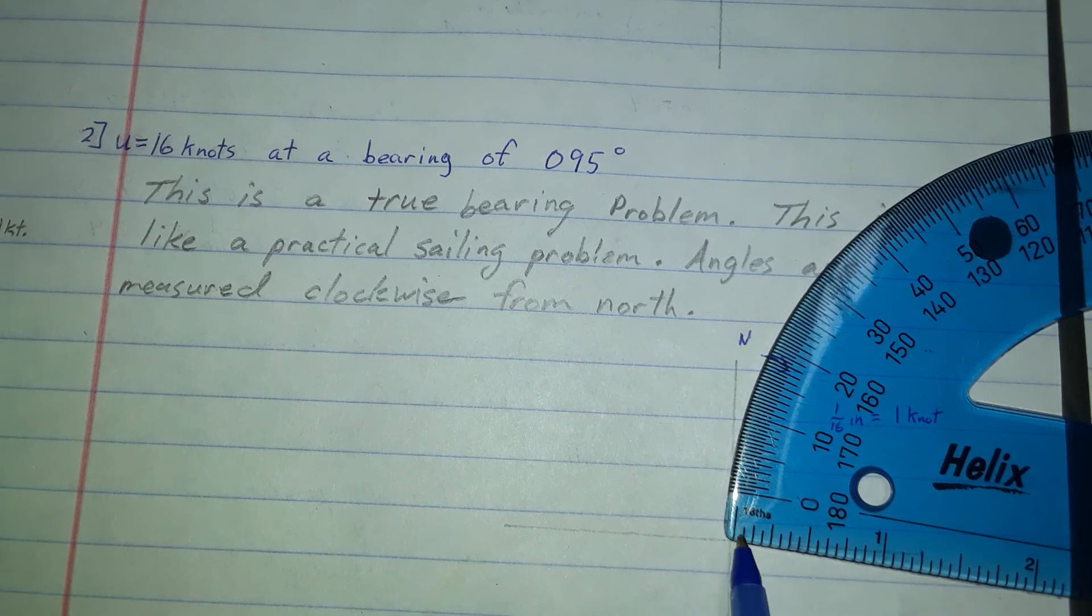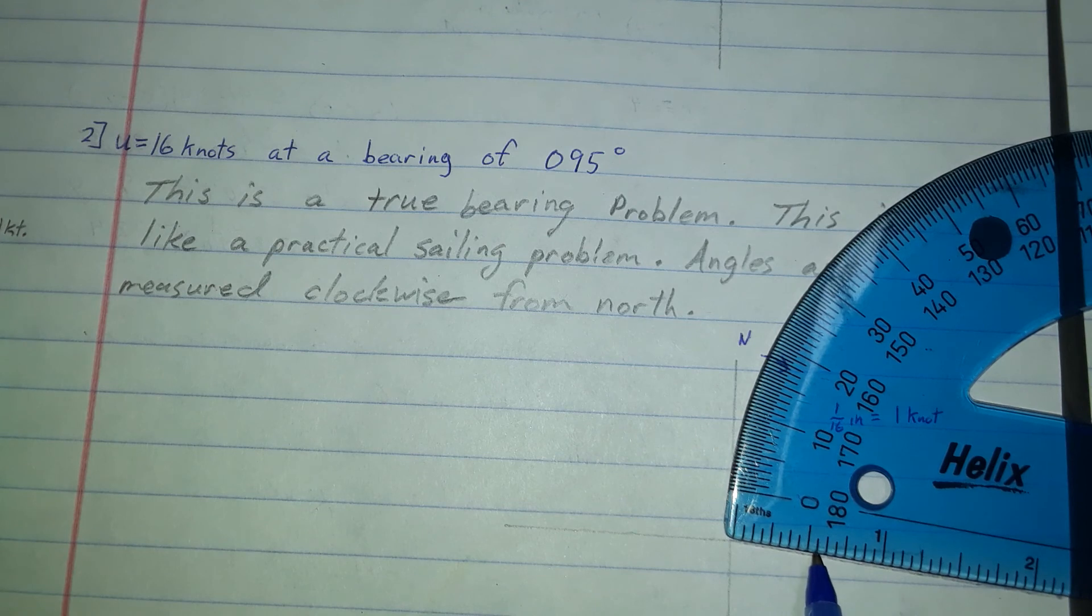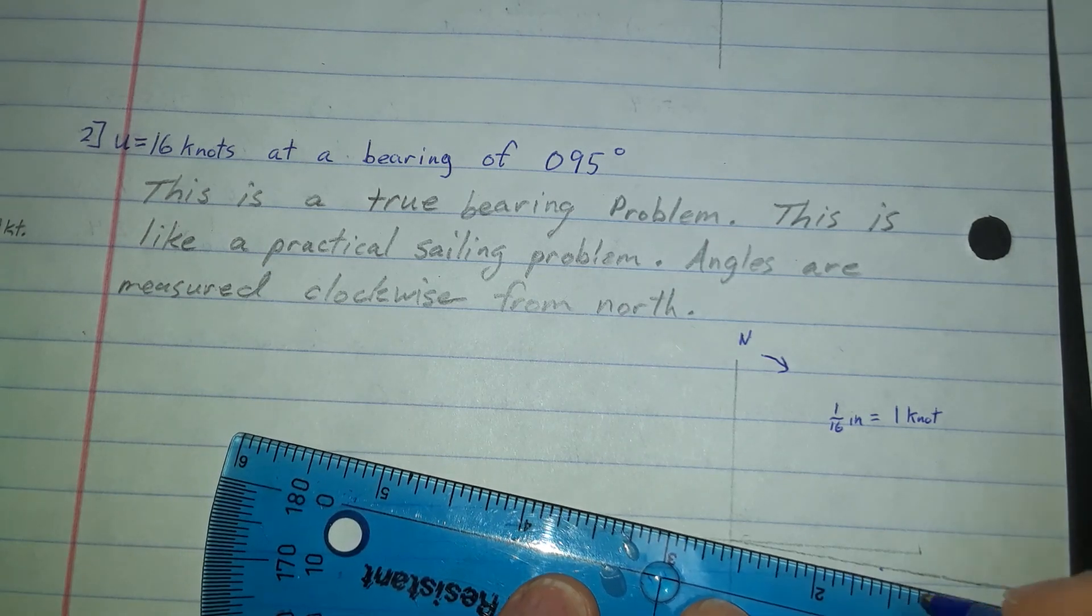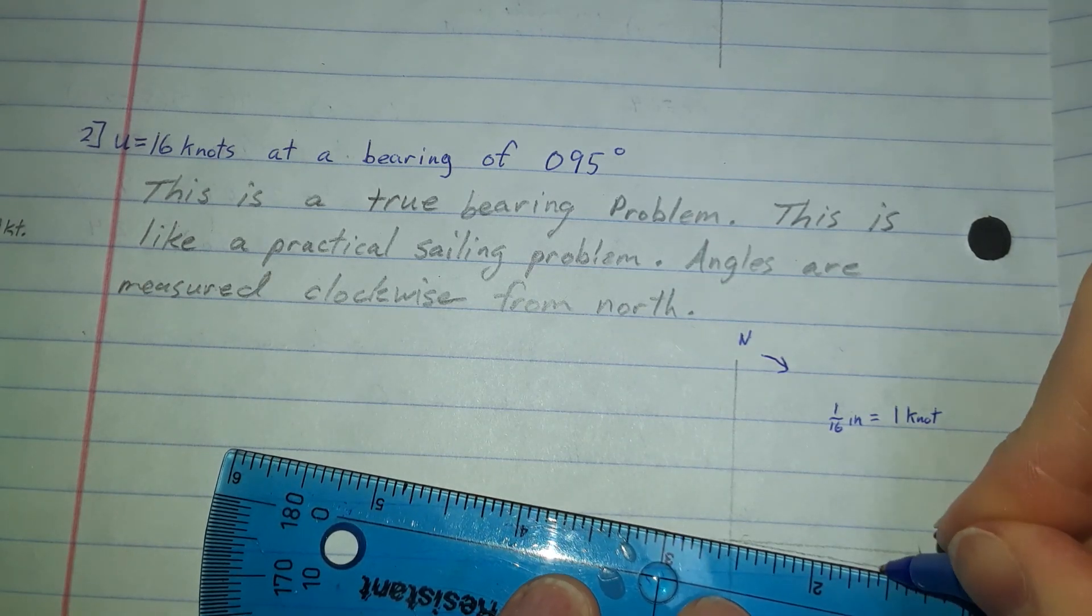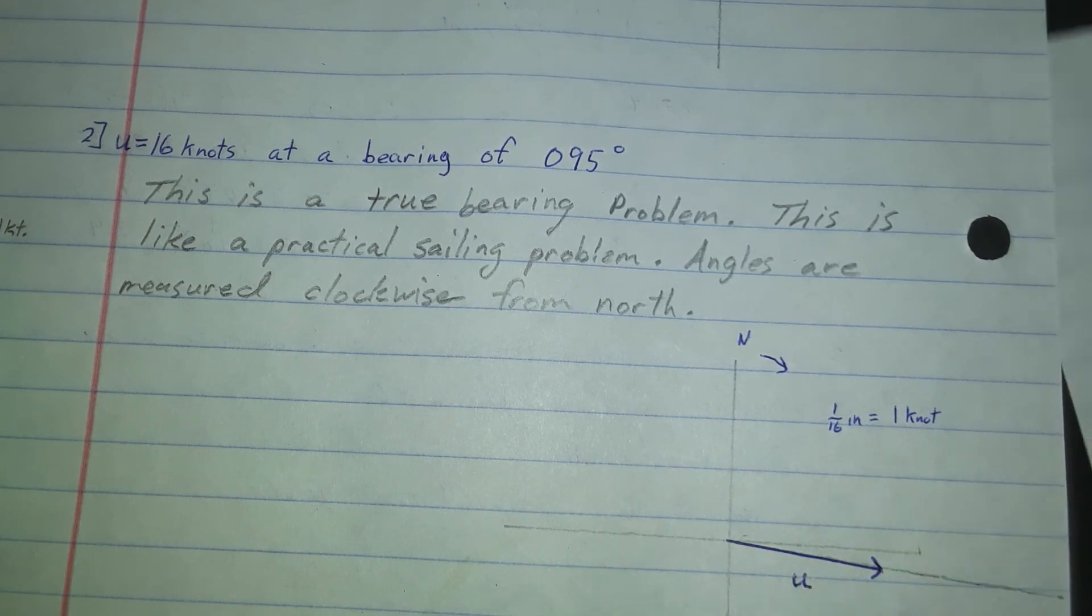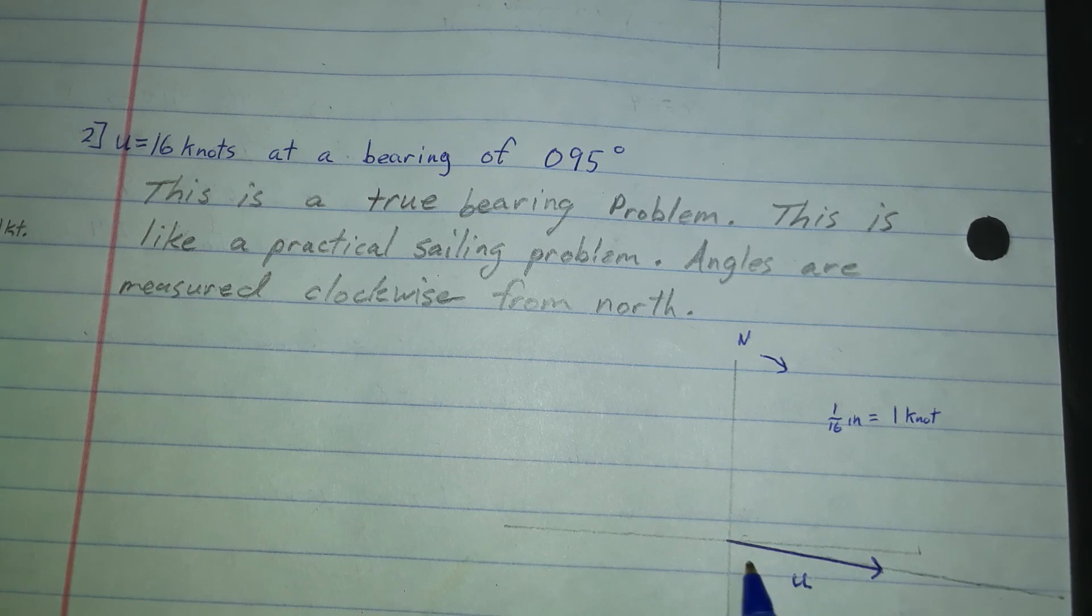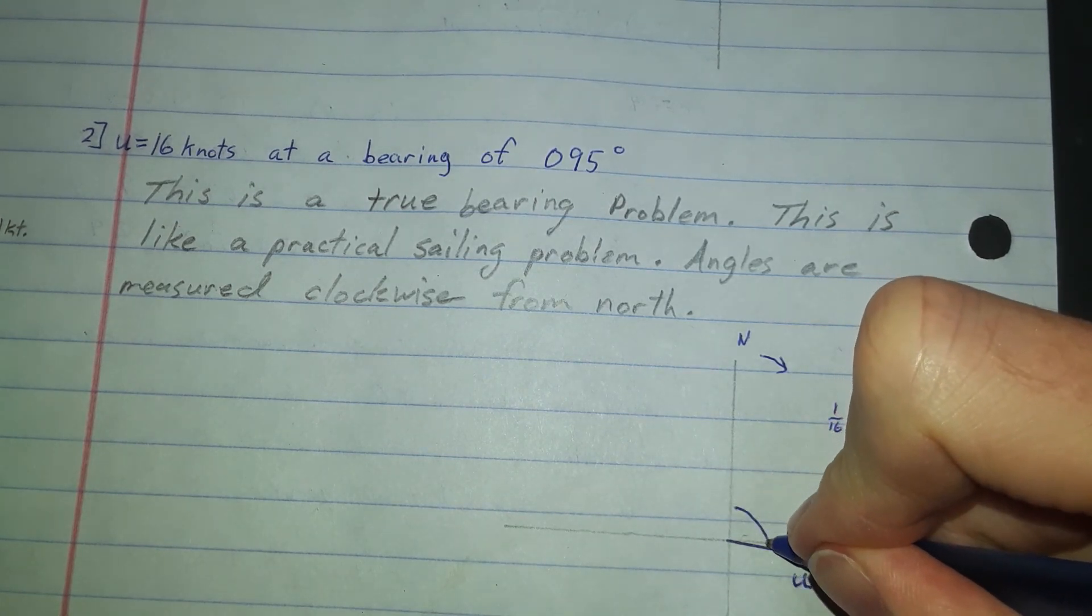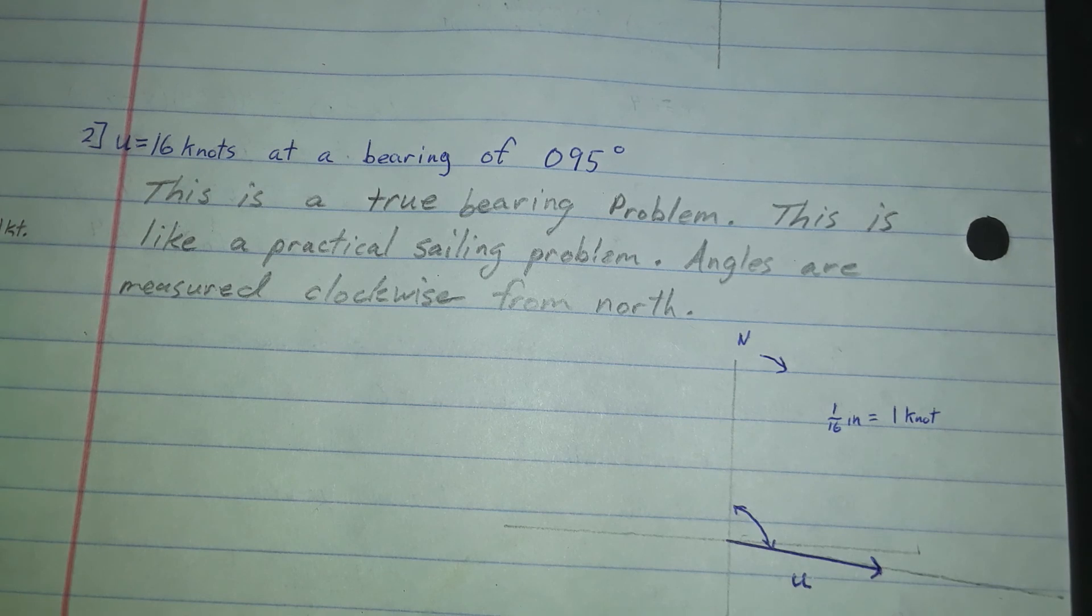I'm just going to count 16 out. Counting 1, 2, 3, 4, 5, 6, 7, 8, 9, 10, 11, 12, 13, 14, 15, 16. I find that's an inch. Some of you probably already realized that's where we were going to end up. From here back to the origin is my vector. I put my arrowhead here. This is my vector U. This represents a magnitude of 16 knots at a true bearing of 95 degrees. That is the 95 degrees.